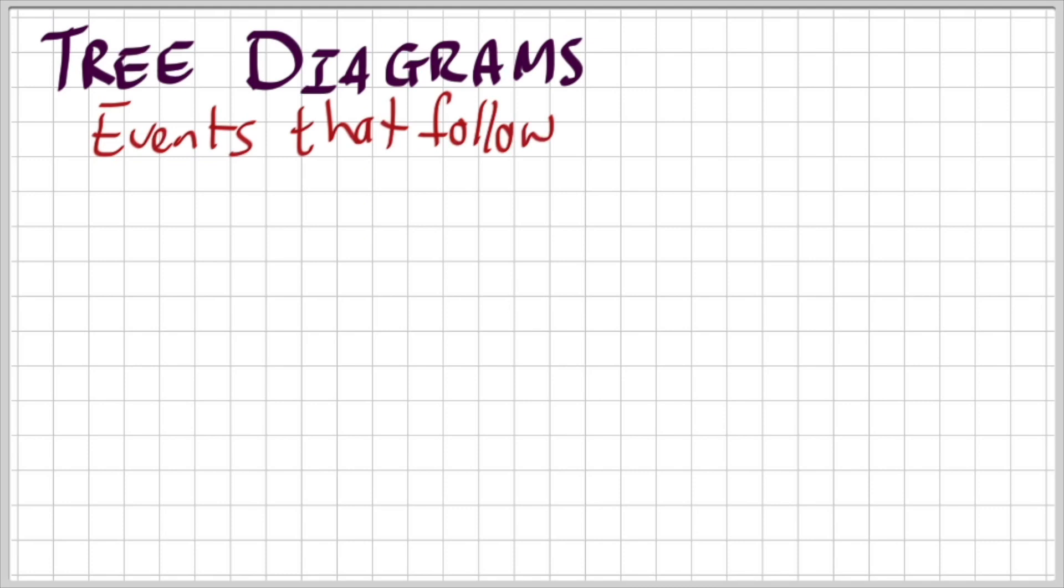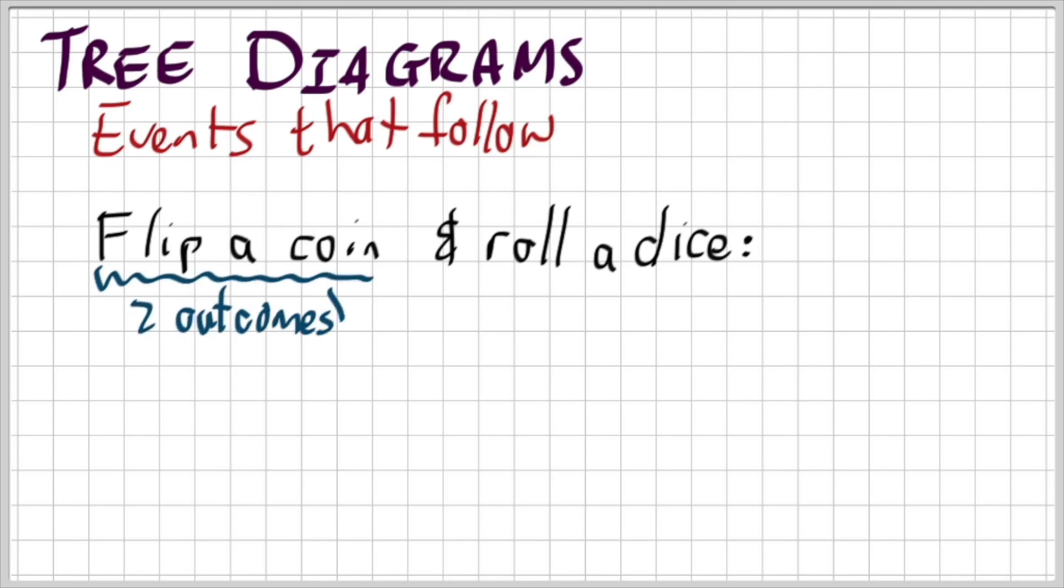Now the two events ladies and gentlemen could either be dependent on one another or independent. We're not going to worry too much about whether they are dependent or not in this video but we're just going to look at a very basic tree diagram. I flip a coin and I roll a dice. Now if I flip a coin let's have a look. How many outcomes are there?